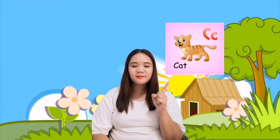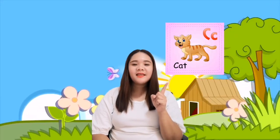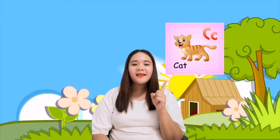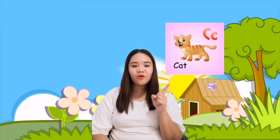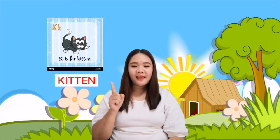So next animal is cat. Spell cat. C-A-T. Cat. So what do you call the baby cat? It is what you call the kitten. Spell kitten. Say K-I-T-T-E-N. Kitten. Very good.